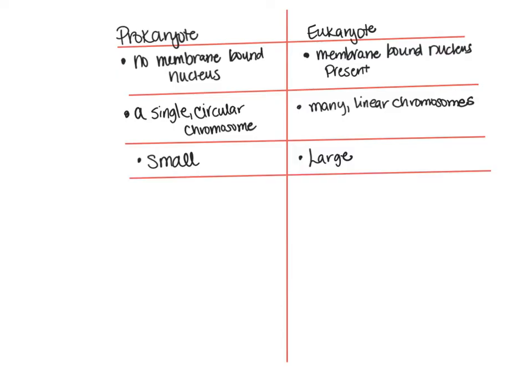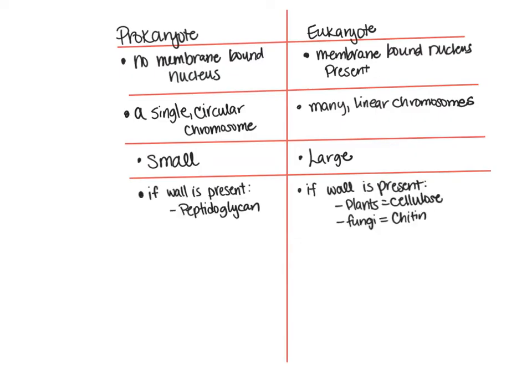Next, we're going to compare the cell walls for the prokaryote and the eukaryote. If a cell wall is present in a prokaryote, it's going to be made of a molecule called peptidoglycan. If a cell wall is present in eukaryotes, such as the case for plants, it is called cellulose. If the eukaryote is a fungi, then the cell wall will be made of chitin, another carbohydrate.